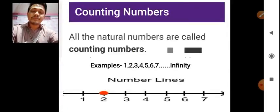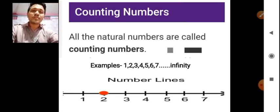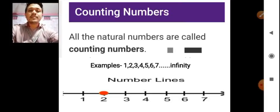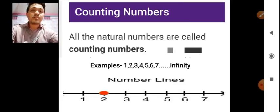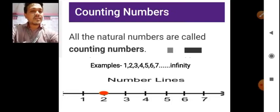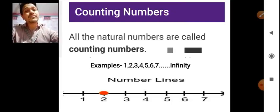First of all, we have counting numbers. What do you mean by counting numbers? Counting numbers are all the natural numbers we use in our day-to-day life — to count the number of students, we start from 1. Another example is the number of fishes in a pond or aquarium. We basically count from 1. So counting numbers are all the natural numbers which start from 1 till infinity.